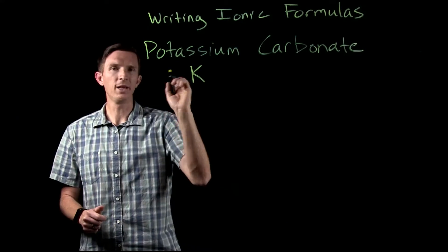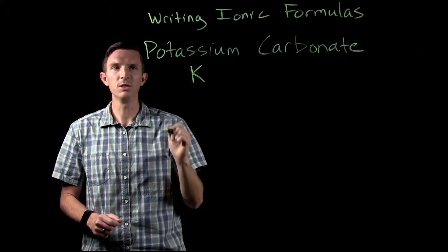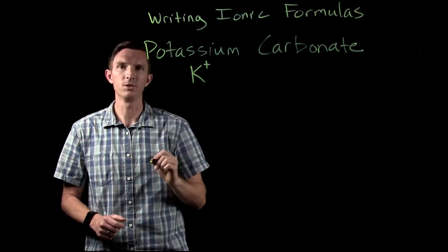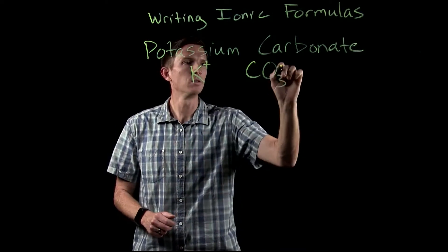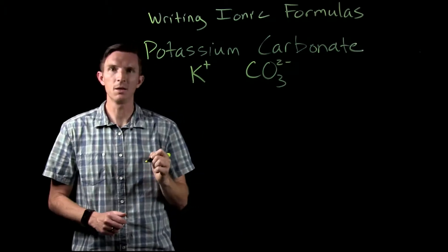Potassium is a group 1A metal, which means it's always going to make a plus 1 charge ion. Then we have carbonate, CO3 2 minus, the polyatomic ion.